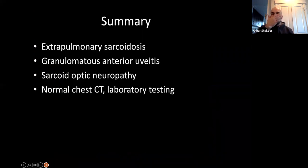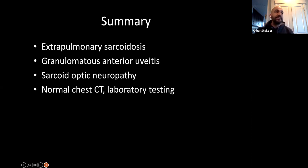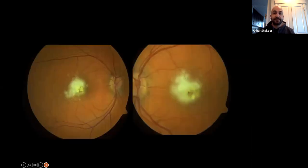In summary, this is extra-pulmonary sarcoidosis with granulomatous pan-uveitis, sarcoid optic neuropathy, and normal chest CT and lab testing. So you can get sarcoidosis with optic nerve and uveal involvement but with normal imaging and testing. Sarcoid can present in all kinds of ways.